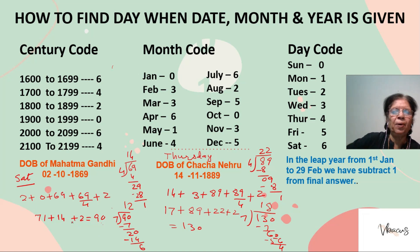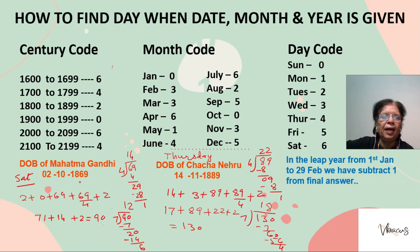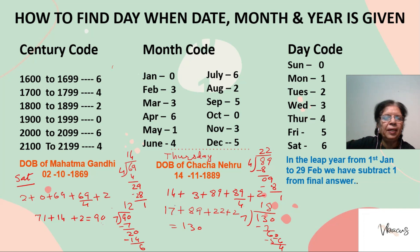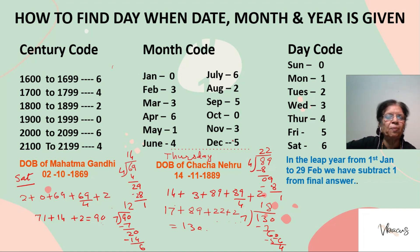Let us take one more example. On which day was Chacha Nehru born? Chacha Nehru was born on 14th November 1889. The date is 14, and the month code for November is 3. The last two digits of the year are 89. 89 divided by 4 gives a quotient of 22. The century code for 1800–1899 is 2. Adding together: 14 plus 3 plus 89 plus 22 plus 2 equals 130. Dividing 130 by 7 gives a quotient of 18 and a remainder of 4. The day code 4 is Thursday, so Chacha Nehru was born on Thursday.